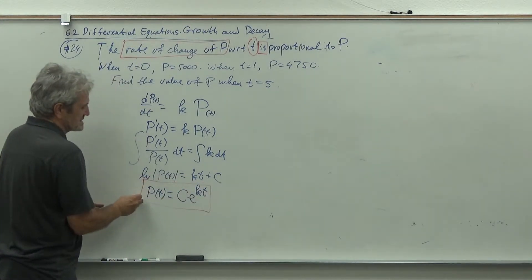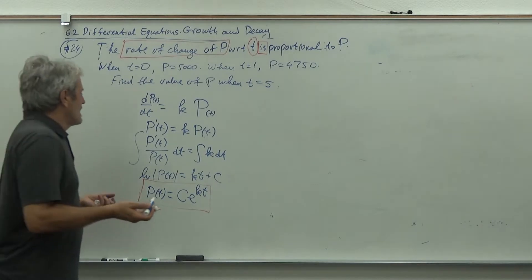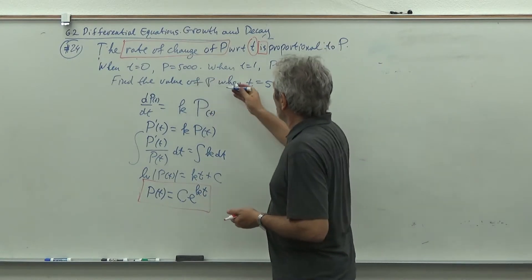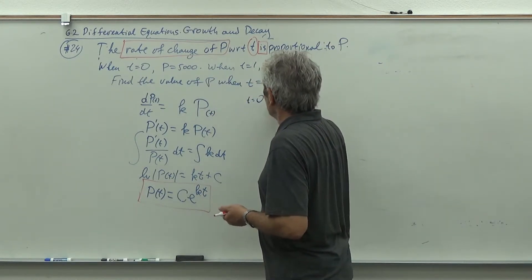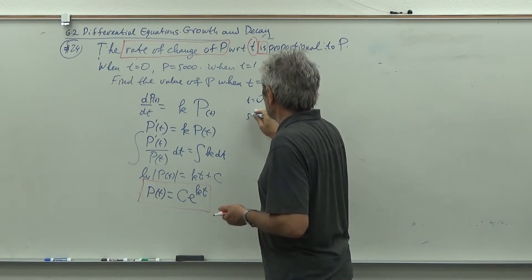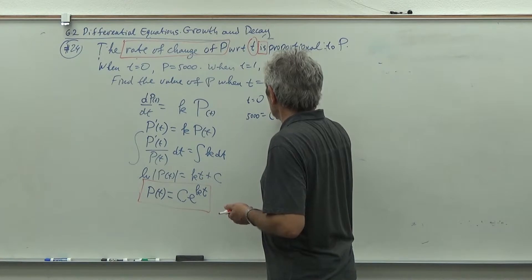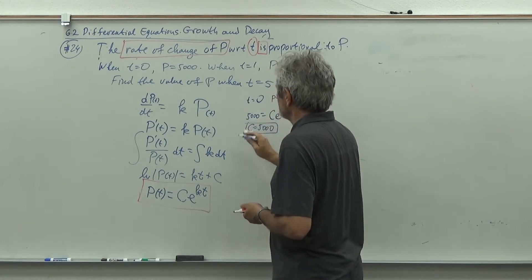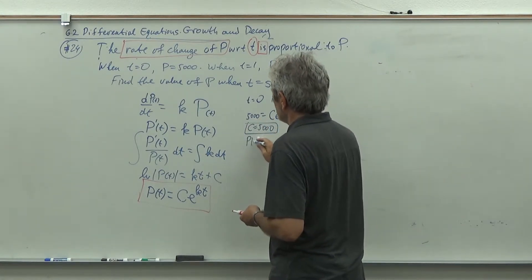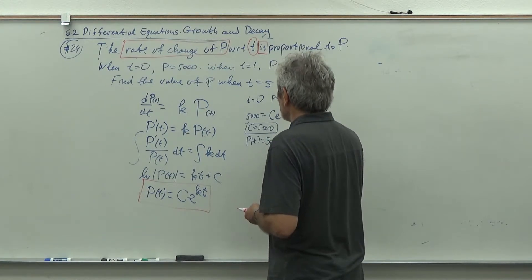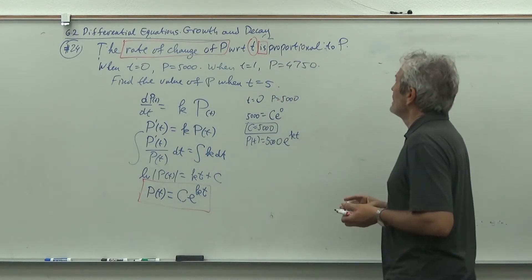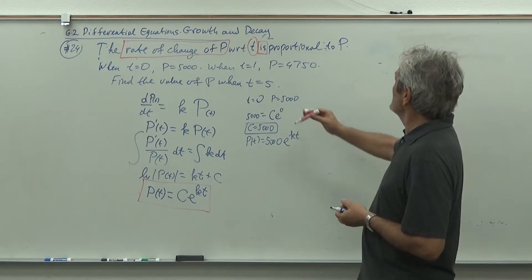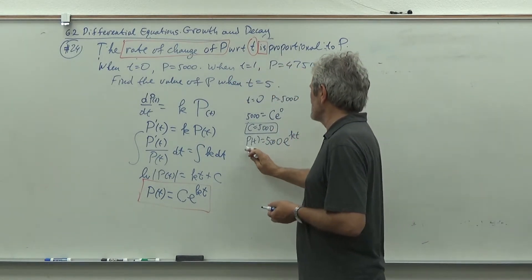So E to the C will become C plus or minus because of absolute value. E to the kT becomes here. So that's our solution. It actually says it's an exponential function. And then there are two things missing: k is missing and C is missing. So we'll first plug in T equals zero. What will that give us? We'll get 5000 equals C times e to the zero, so we get immediately that C is 5000.